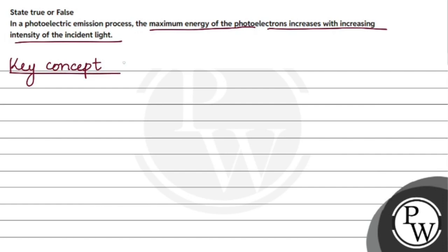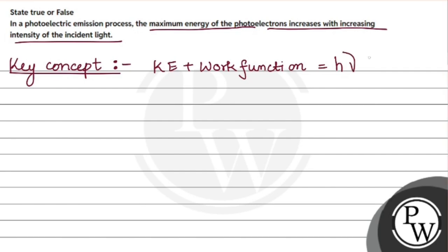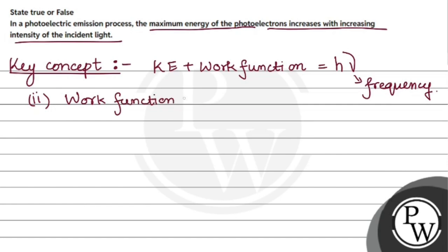The key concept is: energy E is equal to hν, where ν (mu) is frequency. And the work function — our formula for work function — is W = hν₀, where ν₀ (mu naught) is called the threshold frequency.